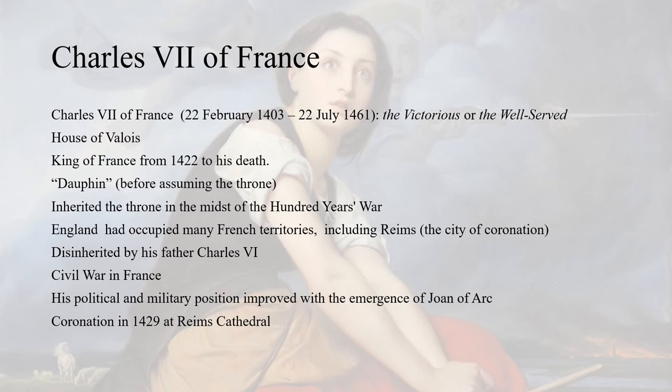Adding to the problems, a civil war raged in France between the supporters of the house of Valois and the Burgundian party — the supporters of Burgundy, who were allied to the English. So Charles the Seventh was in a desperate position and moved his court to the south of the Loire River. However, his political and military position improved with the emergence of Joan of Arc.